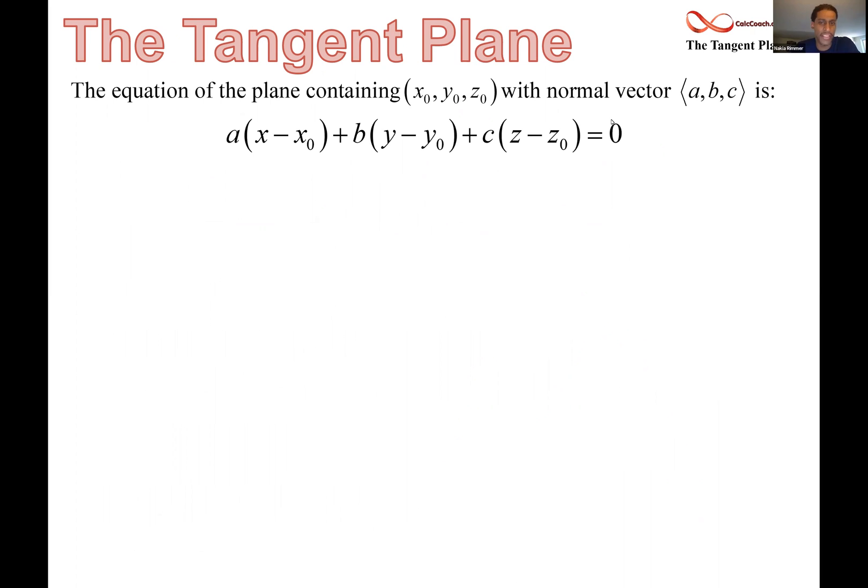This is kind of like a point slope formula. You take your a, b, and c from the normal vector, your x naught, y naught, z naught from the point, and you plug it into this, and this is a form of the equation of the plane.